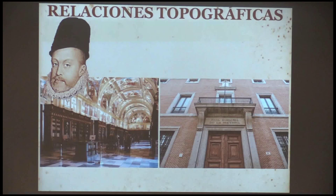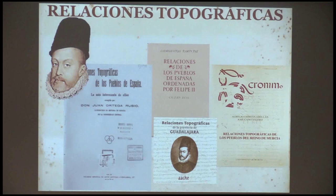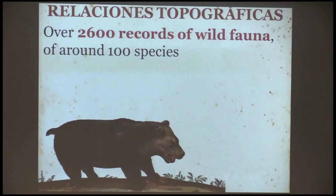The original documents are in the Escorial monastery, but they were copied in the 18th century by the Academia de la Historia in Madrid, so there is a readable copy — because 16th-century documents are very difficult to go through. There is also a compilation by Ortega from the early 20th century, but it reflects only what that person found most interesting. The best approach is to use transcriptions made by historians or to go to the Academia de la Historia directly. The Relaciones contains over 2,600 records of wild fauna of around 100 species, plus many records of wild plants and crops.